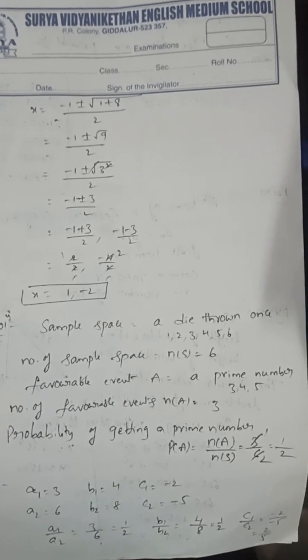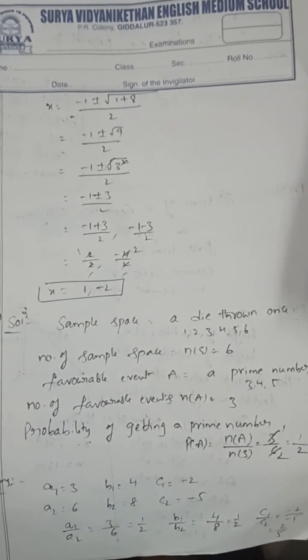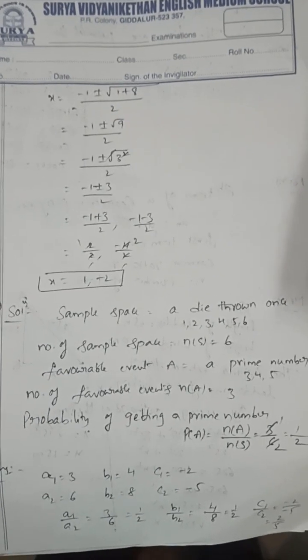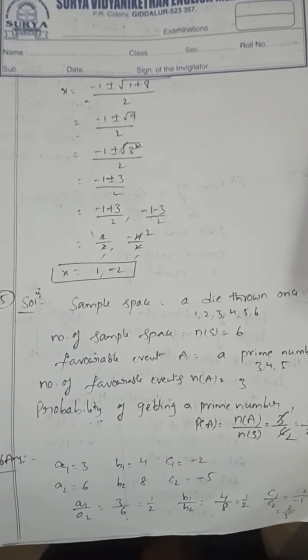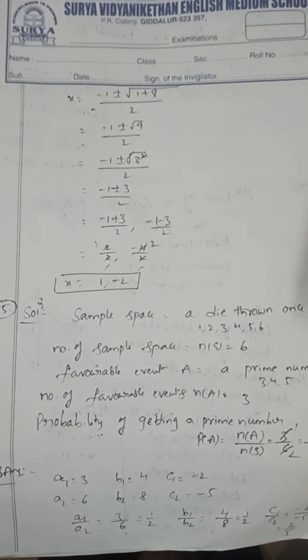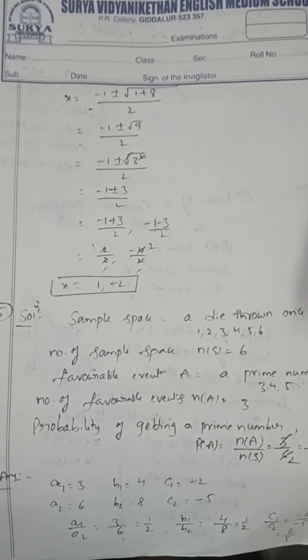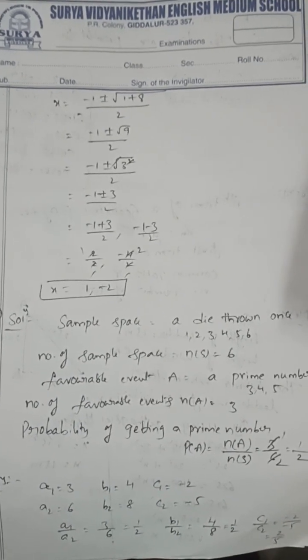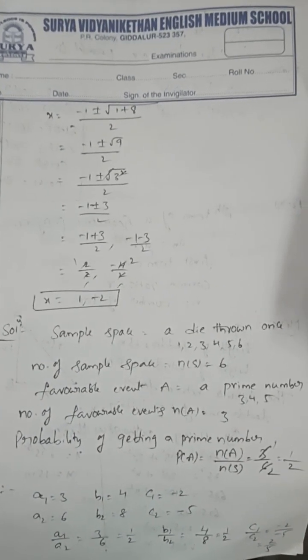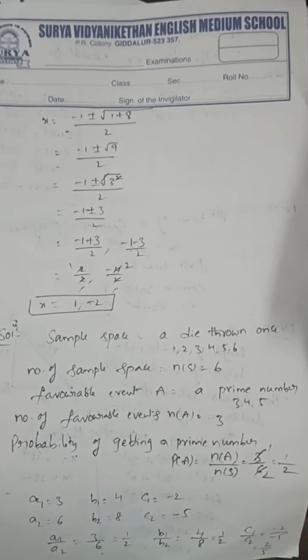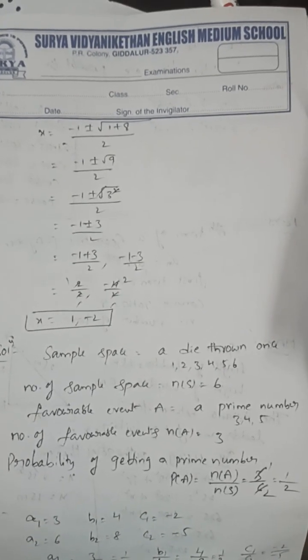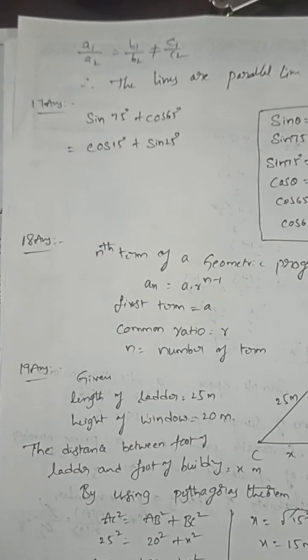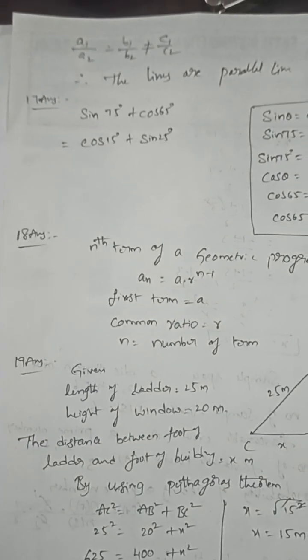Check if the equations are parallel lines. You can check by using the ratios of x coefficient, y coefficient, and constant. a₁=3, b₁=4, c₁=-2; a₂=6, b₂=8, c₂=-5. a₁/a₂ = 3/6 = 1/2, b₁/b₂ = 4/8 = 1/2, c₁/c₂ = -2/-5 = 2/5. Since a₁/a₂ = b₁/b₂ ≠ c₁/c₂, the lines are parallel.